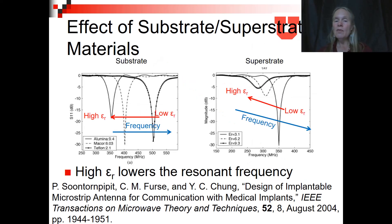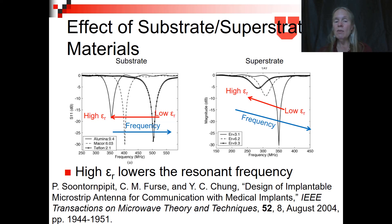We considered different materials for the substrate and superstrate. Using a high dielectric material lowers the resonant frequency — effectively making the antenna electrically larger — while a low dielectric raises the frequency, making the antenna electrically smaller. The difficulty at this time was that there were not very many high dielectric materials that were also biocompatible. The three we chose were Teflon, Macor, and Alumina, with dielectric constants ranging from 2 to almost 10.